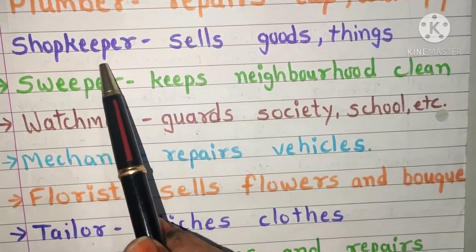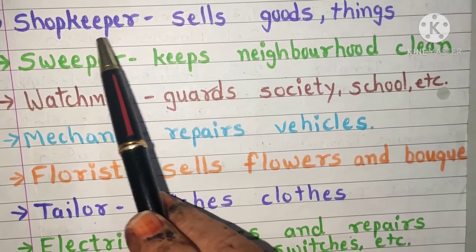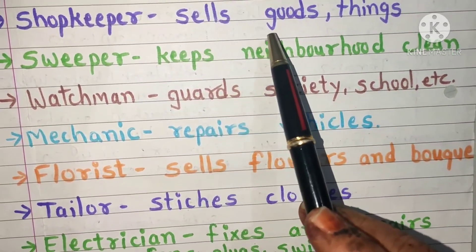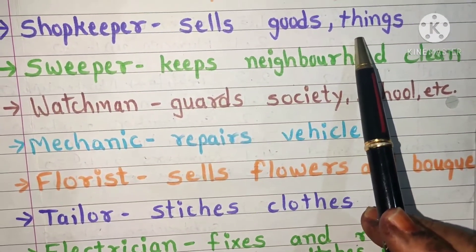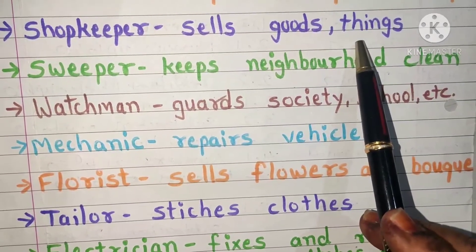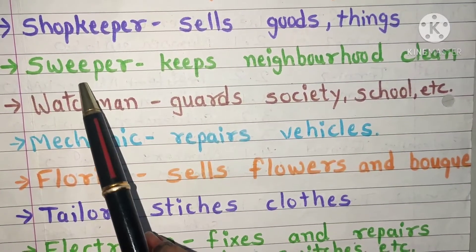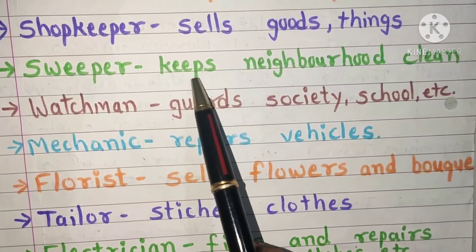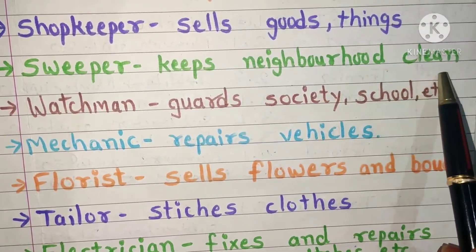Shopkeeper sells different goods and things in a shop, in the market. Sweeper keeps the neighborhood clean.